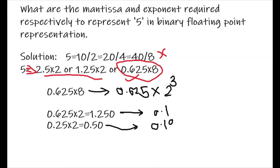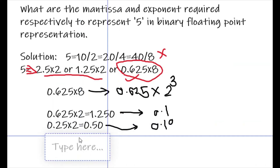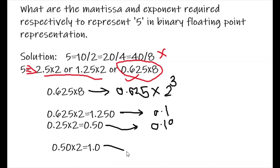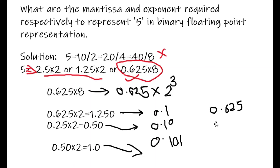Again multiply 0.50 with 2, and you get 1.0. So the next number in your conversion is 1, giving the binary result 0.101. So 0.625 in binary is 0.101.